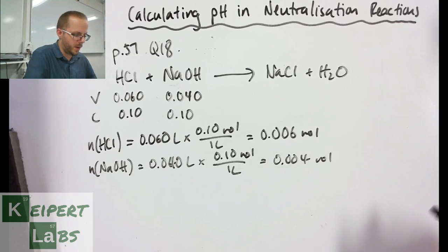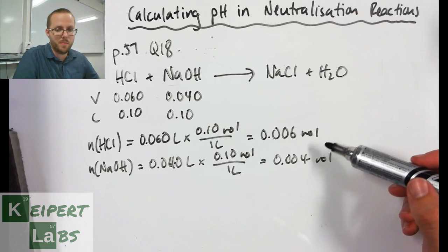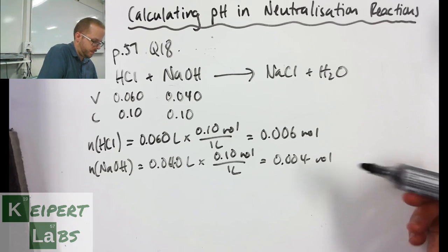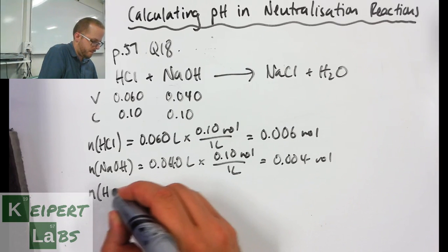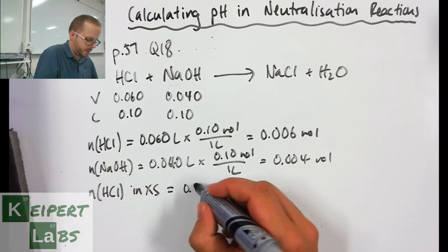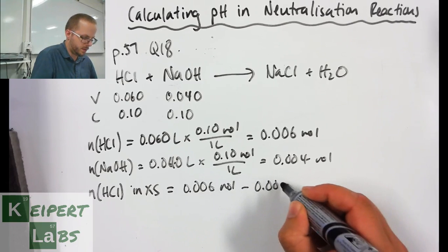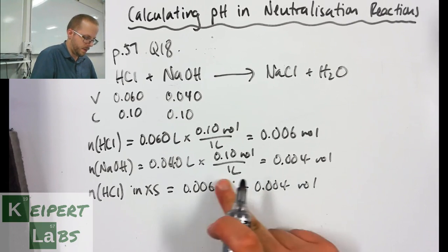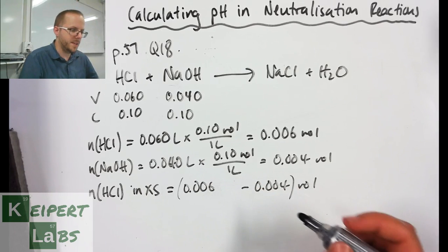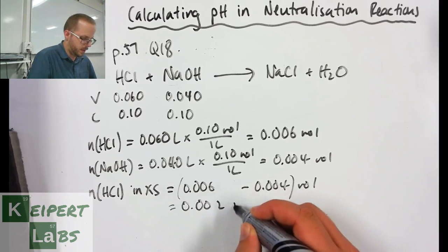So we notice that with a 1 to 1 ratio, the moles of our acid are in excess. We have more moles of acid than we do base, so we're going to be left with moles of acid left over. In excess equals 0.006 moles minus 0.004 moles, and so then we get 0.002 moles remaining.